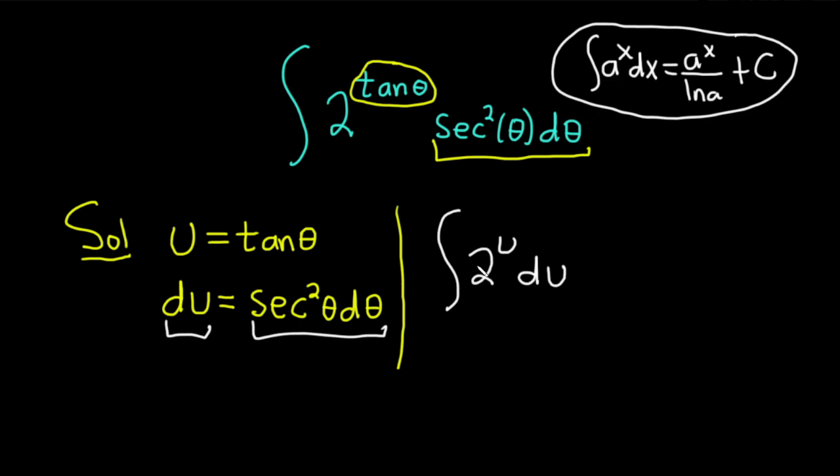In this particular example, a is 2. So this is equal to 2 to the u over the natural log of 2 plus our constant of integration capital C.